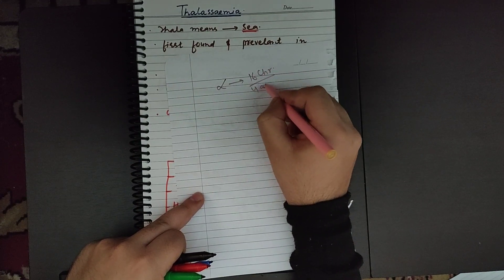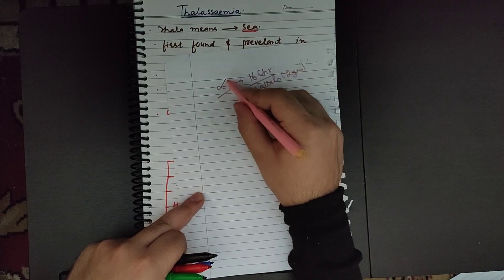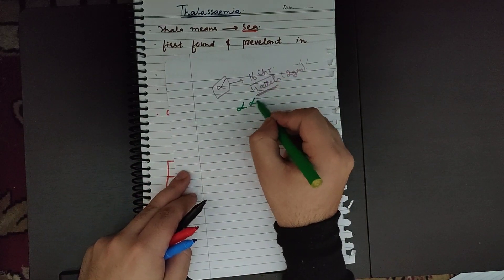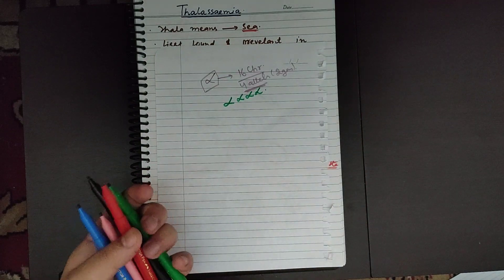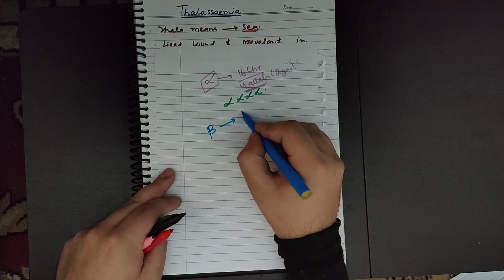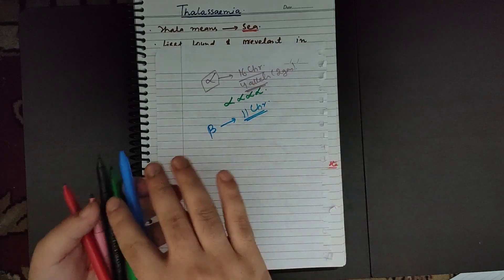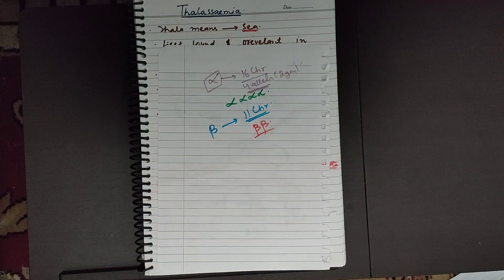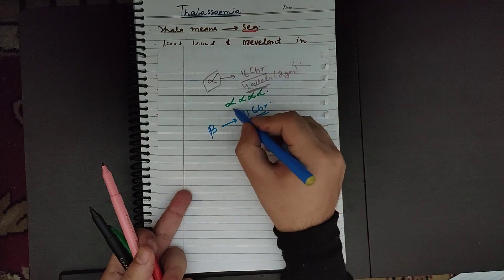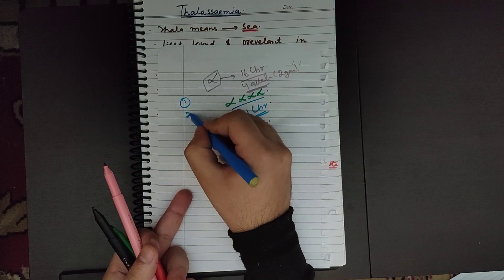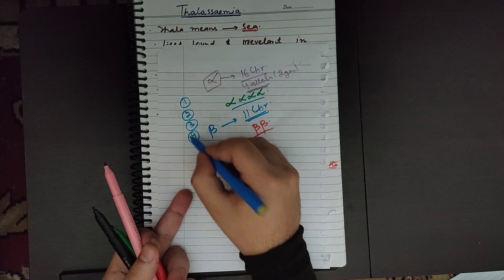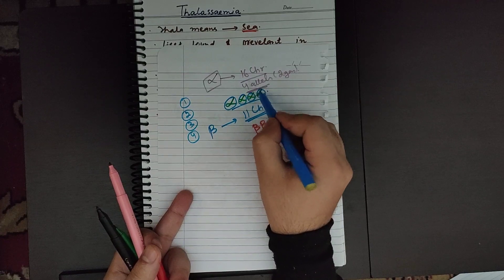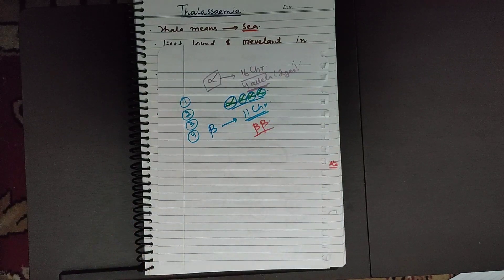Alpha chains are controlled by four alleles, so we have a total of four alpha alleles. The gene controlling beta is present on chromosome number 11 and there are only two alleles. For alpha, either one, two, three, or all four alleles will be absent — that's why we have four conditions related to alpha thalassemia.